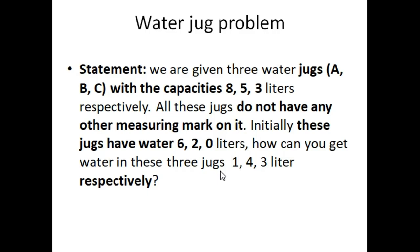So how can you get the water in these three jugs? The final state is 1, 4, 3. So in our first jug there will be 1 liter, there will be 4 liters in jug B, and there will be 3 liters of water in jug C in our goal state. So here is the initial state and here is the final state.